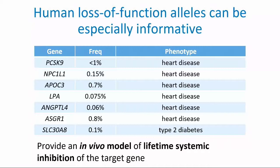That provides compelling in vivo data in support of various therapeutic hypotheses. A particularly useful class of variants has been loss-of-function alleles — variants predicted to cause complete disruption of protein-coding genes. This table shows cases where loss-of-function variants, often very low-frequency ones, are associated with protection against disease, many in cardiovascular disease and at least one example in type 2 diabetes. These variants provide in vivo models of lifetime systemic inhibition of a particular gene.